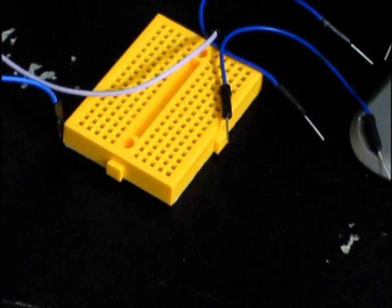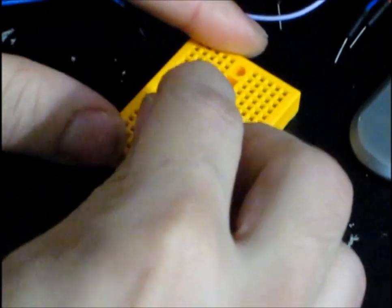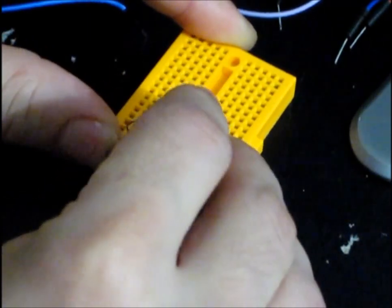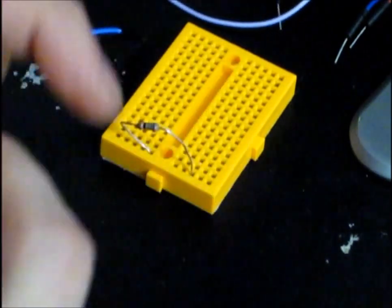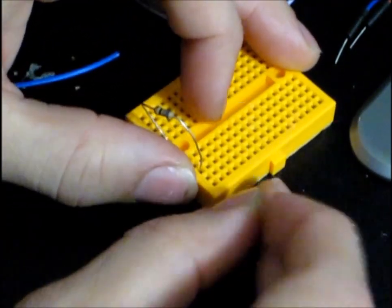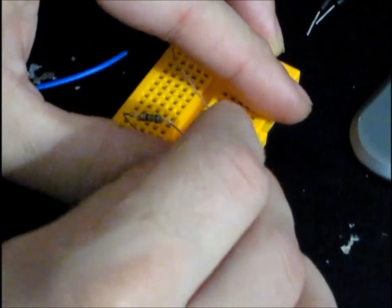We'll start with our 68-ohm resistor. Just plug it into the breadboard. There we go. And then that will be V1... I'm sorry, R1. And then here is our 150-ohm resistor, R2.